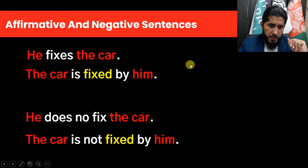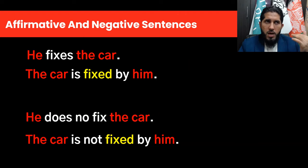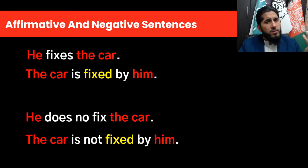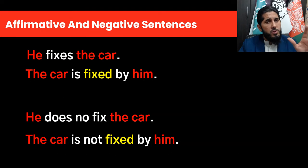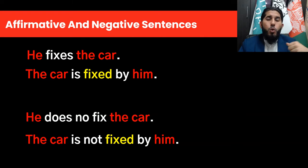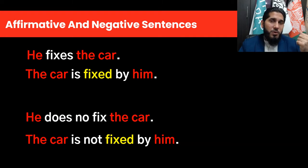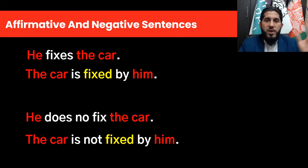Before I explain these sentences, if somebody asks you why we need to use passive form when we can express the same idea using active form, your answer should be: first, if the focus is more on the receiver of the action and not on the doer — it's not important by whom the action was done, but how or when it was done. Or if the doer of the action is not known, in that case passive form is commonly used in English.